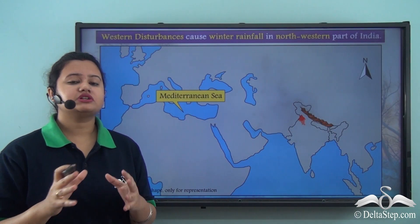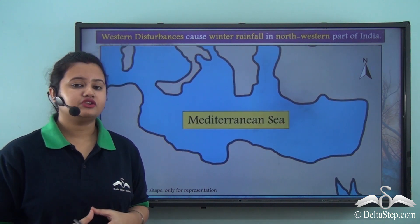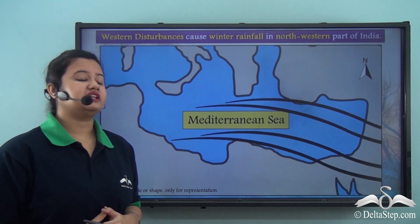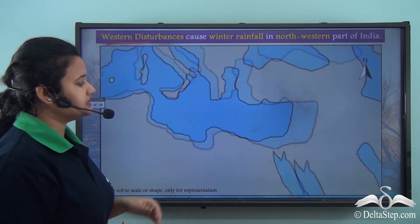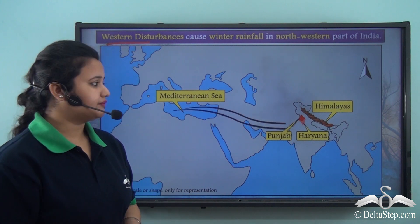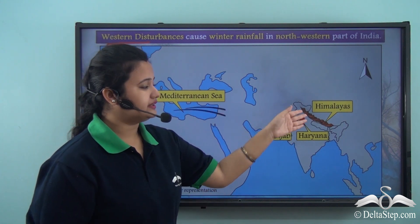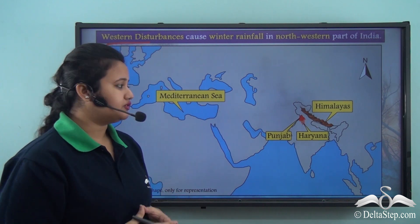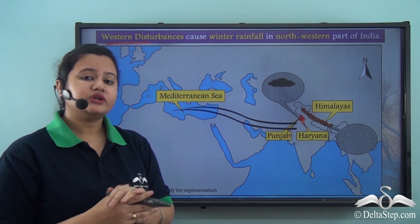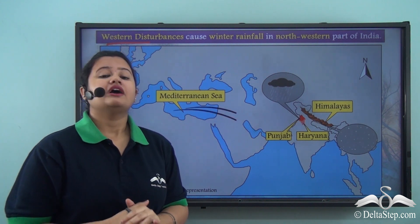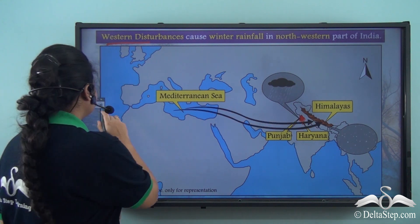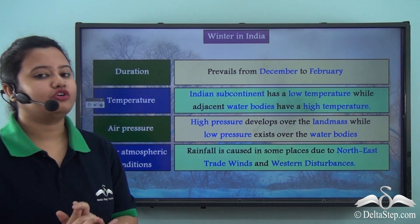Apart from the Coromandel coast, the northwestern part of India also experiences winter rain but from a different source. Western disturbances originate in the Mediterranean Sea and flow eastwards towards northwestern India. On reaching here, they are obstructed by the Himalayas and cause heavy rainfall in Punjab and Haryana, and snowfall in the Himalayan region. This winter rain helps in the growth of rabi crops like wheat and sesame.